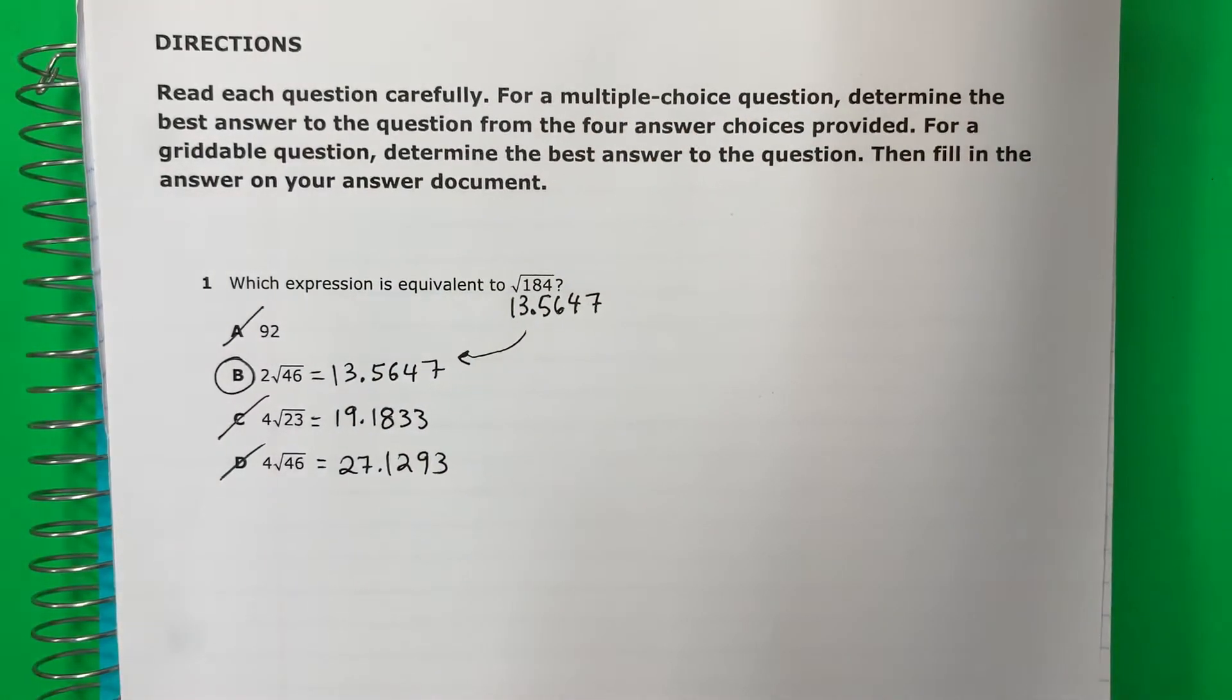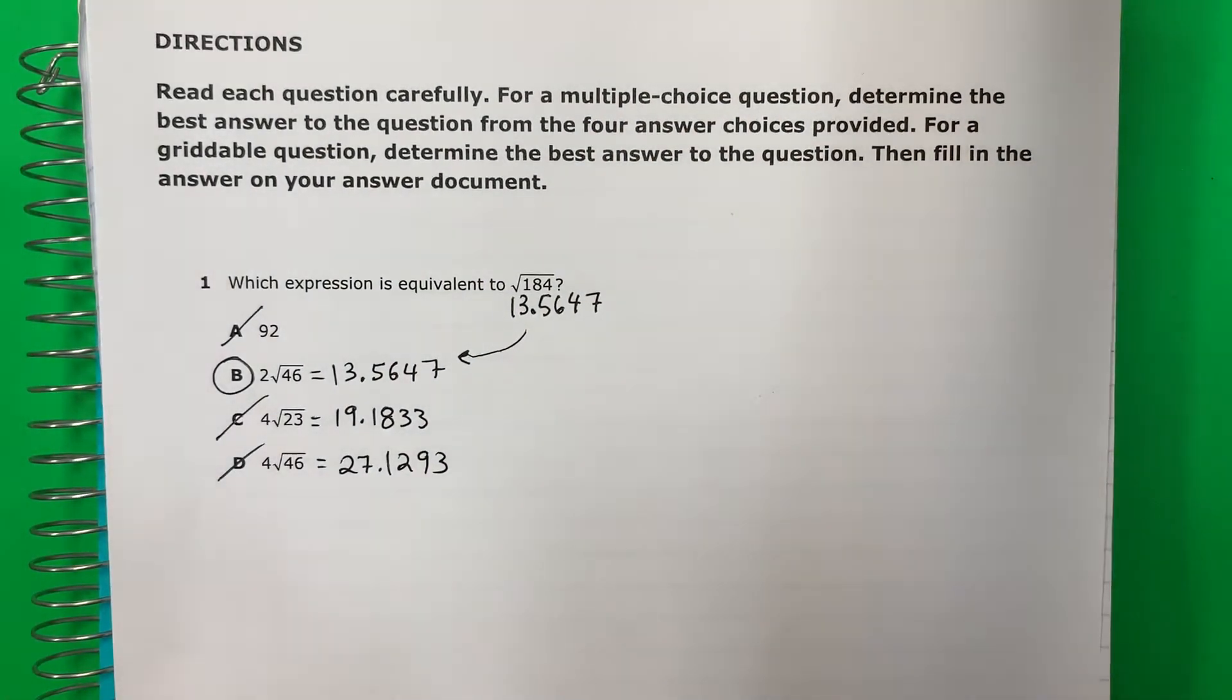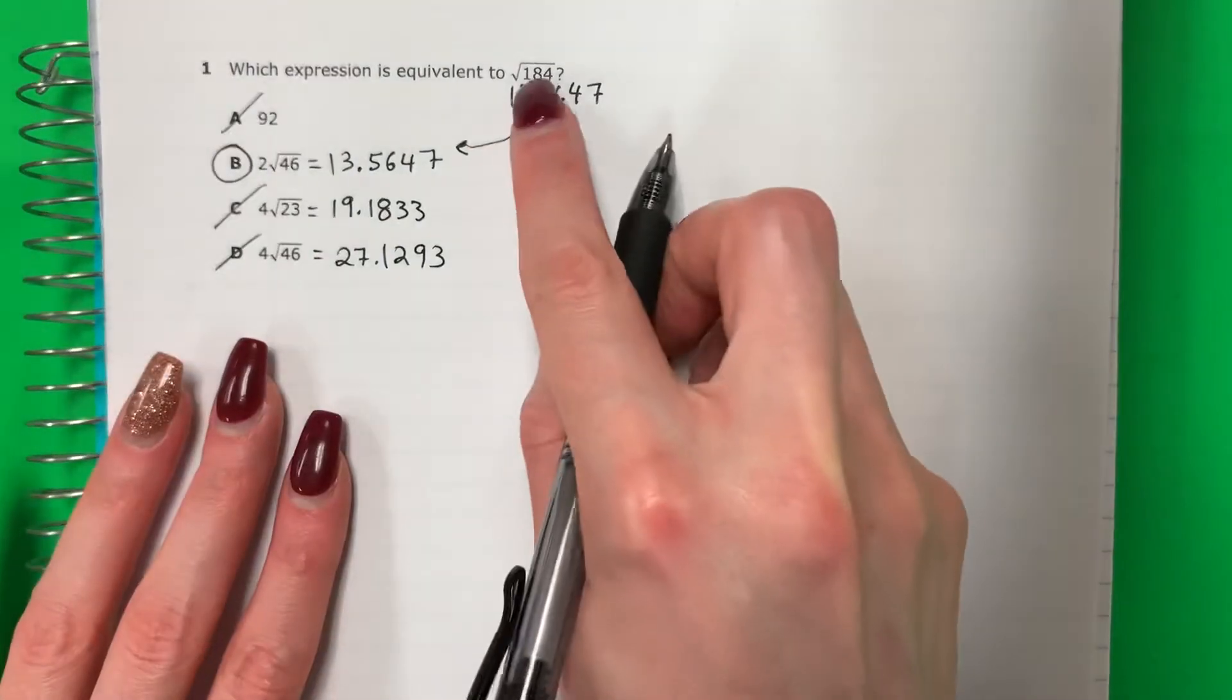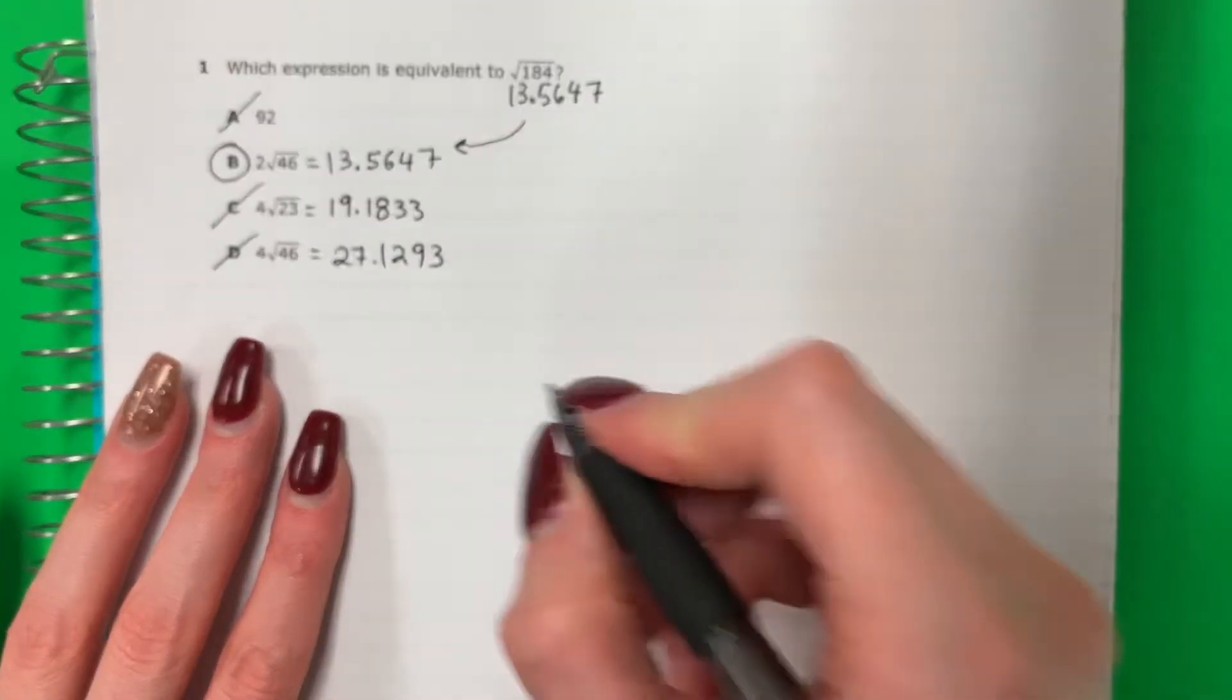Now let me show you how to do it by hand. Ahora déjame mostrarles una otra manera por mano. So I'm going to show you a different way by hand. I will go ahead and do it down here. So I had 184. Tenía 184.